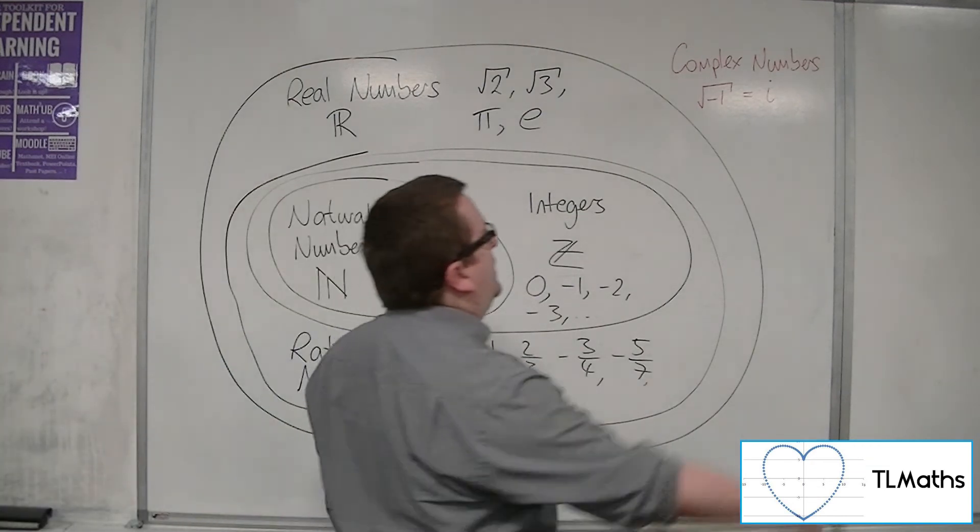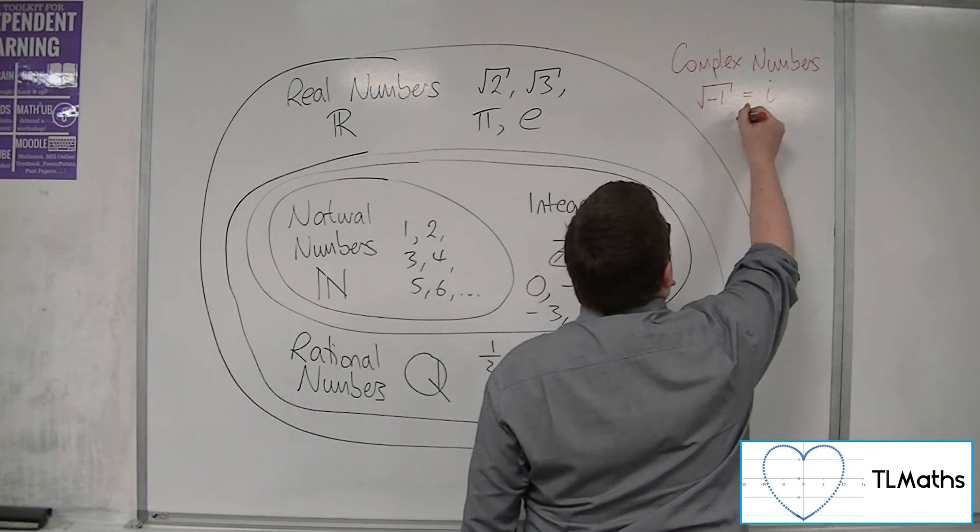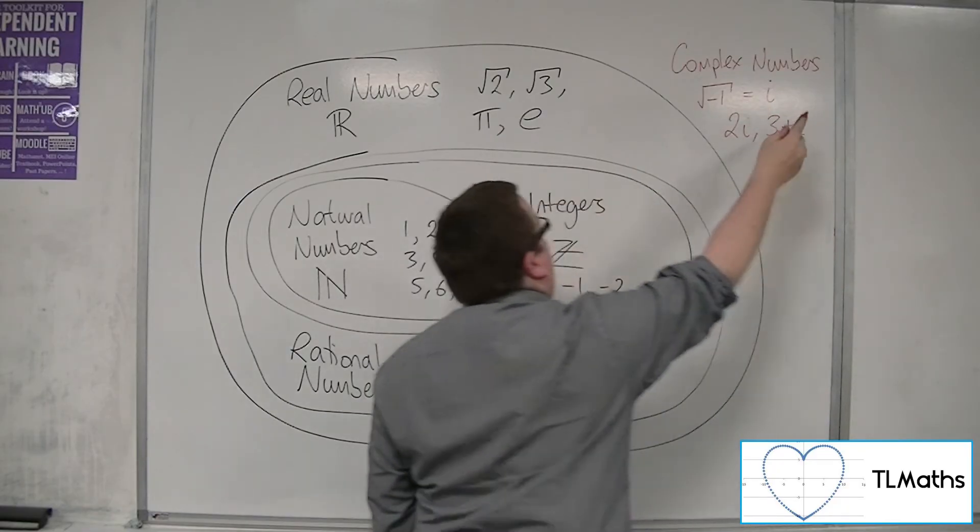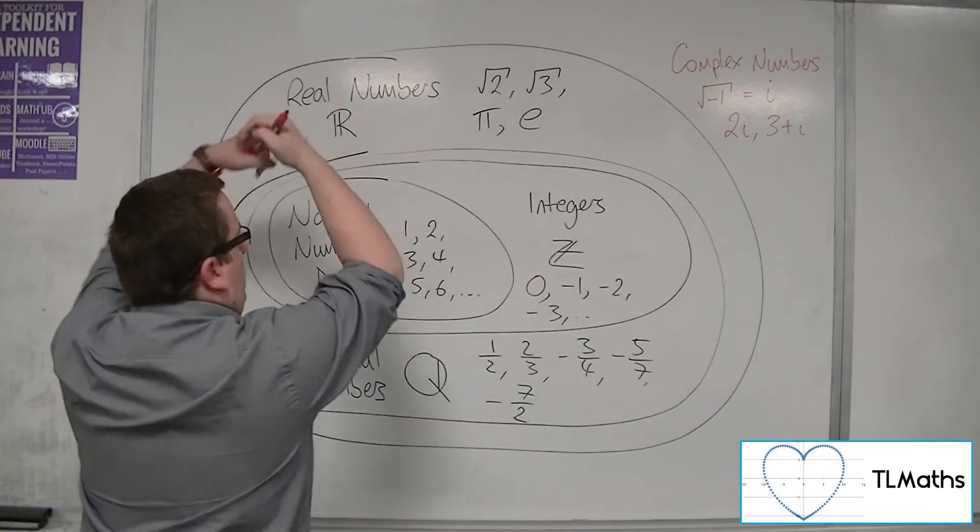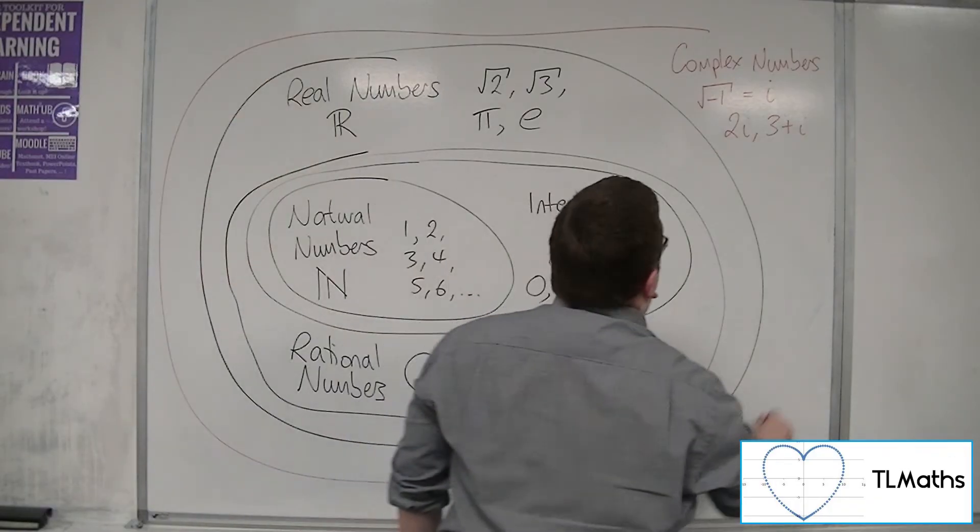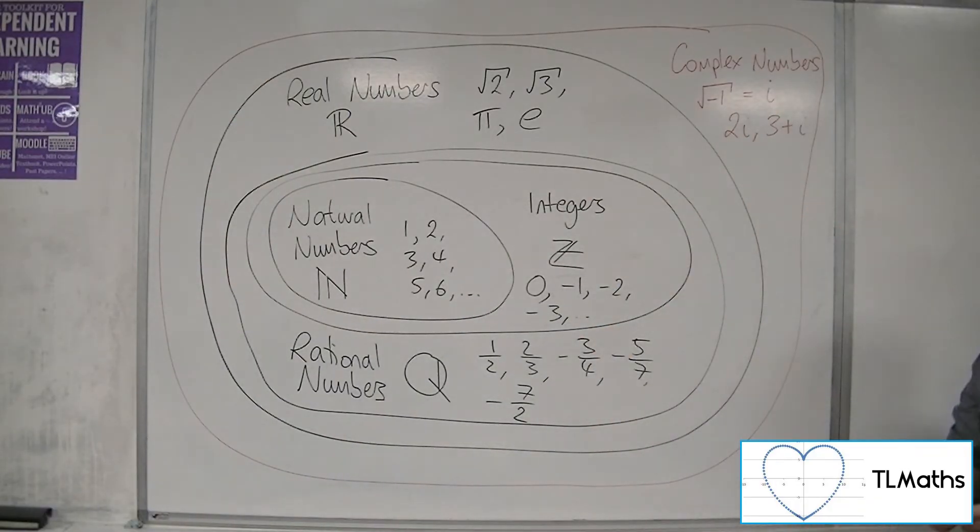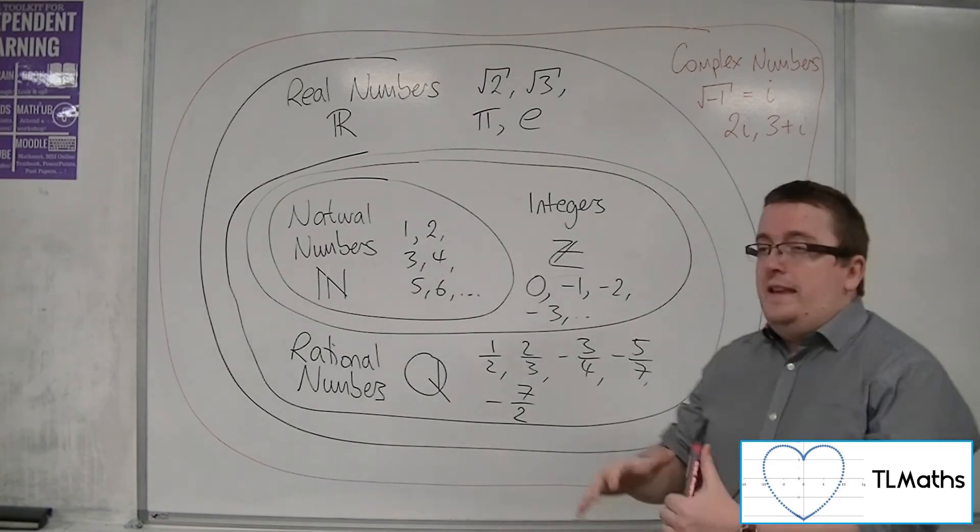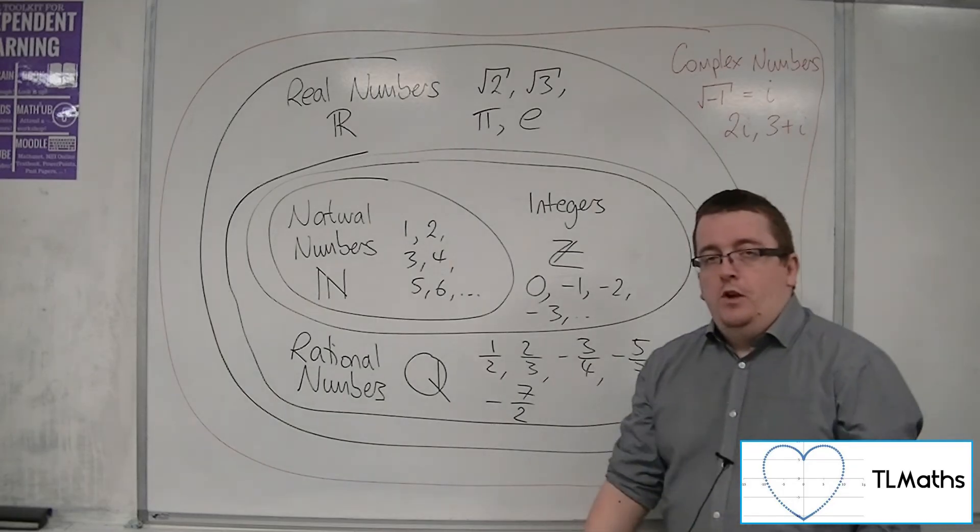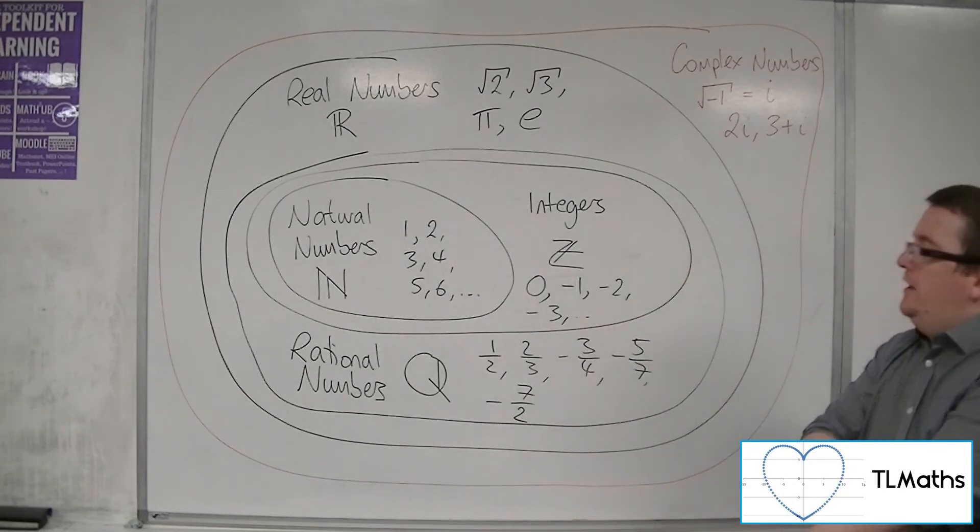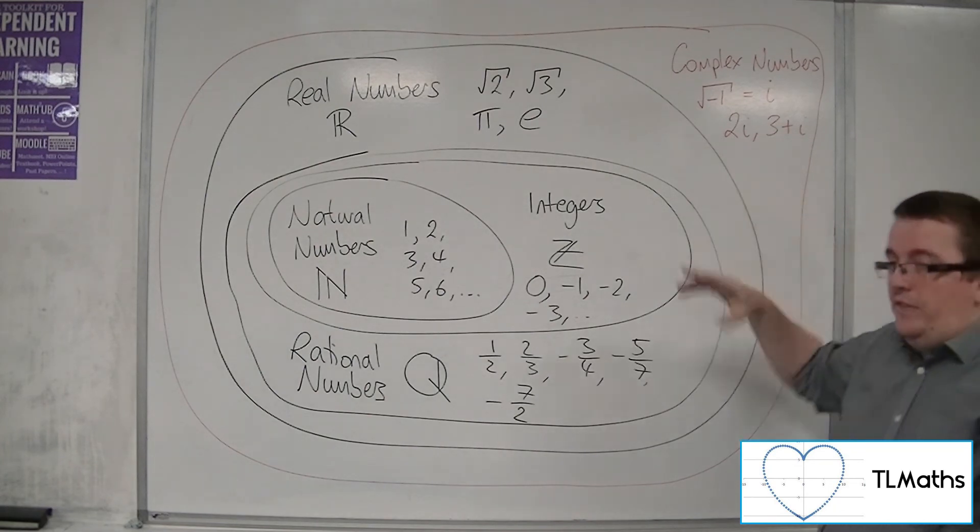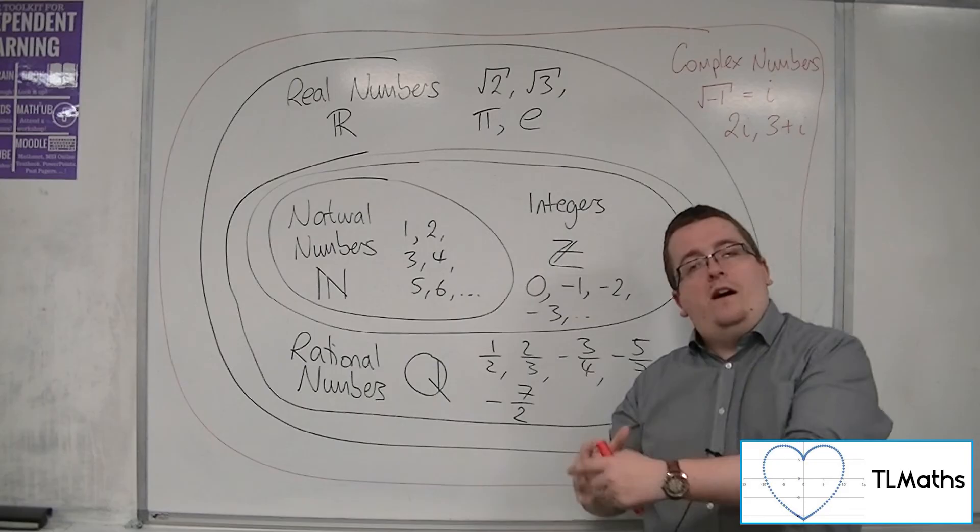And the complex numbers include anything that has an i in it. So we could have 2i or 3 plus i. And this introduces, has all of these numbers, plus any that now have an i in it. So there is this extra layer that's going on in the background. We don't need to worry about it at this stage. But it's good to know that there is something else out there. And there are other layers.